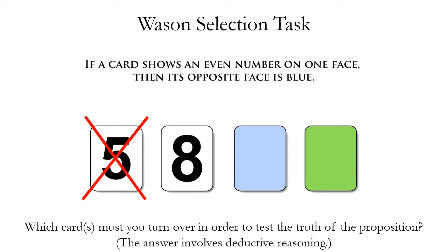Now let's look at the second card, which is an even numbered card — it has an eight on it. Do we need to turn this card over to test the truth of the proposition? The answer is yes. Suppose we flip the card over and it has a green side, a red side, or some other color — that would falsify the proposition. The proposition says if there's an even number on one face, the other face will be blue. So if we turn it over and the other face is not blue, that would falsify the proposition.